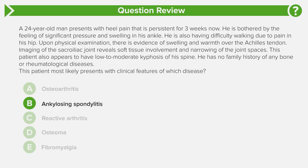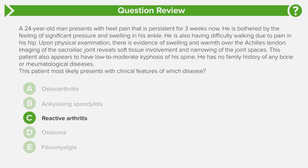Ankylosing spondylitis is really the prototypical example of what's called a seronegative spondyloarthropathy, seen in about 1% of the population. When we identify it as ankylosing spondylitis, we need to think about how it differs from arthritis. Answer choice B is correct — ankylosing spondylitis — but answer choice A is osteoarthritis and answer choice C is reactive arthritis.